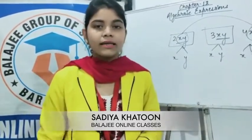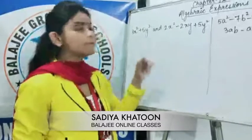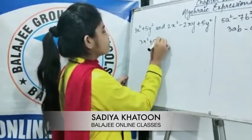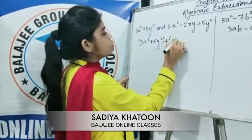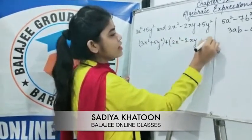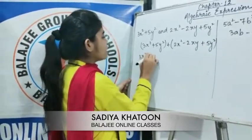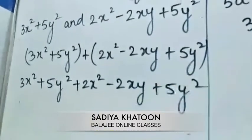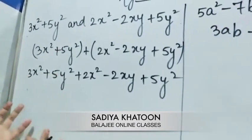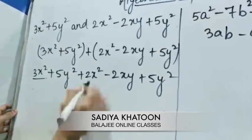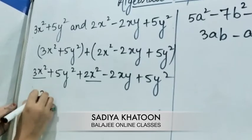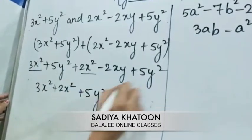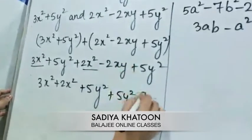Here is an example of addition where you have to add two expressions. First, let's arrange them: 3x squared plus 5y squared, plus 2x squared minus 2xy plus 5y squared. Now let's open it: 3x squared plus 5y squared plus 2x squared minus 2xy plus 5y squared. Bring the like terms together — 3x squared and 2x squared are like terms, 5y squared and 5y squared are like terms, and minus 2xy is left on its own.